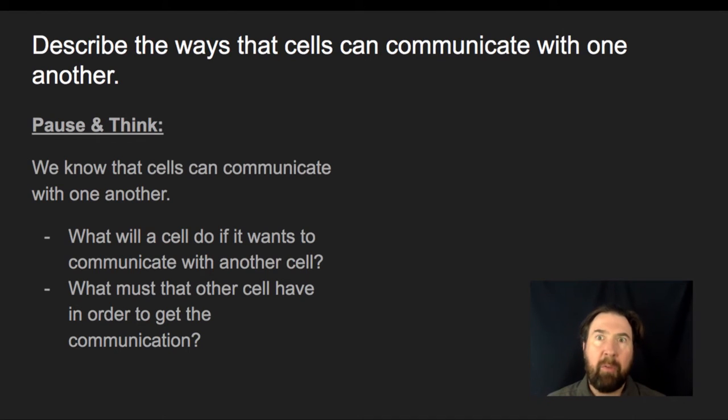In other words, how does a cell communicate to another cell? And then what must the other cell have in order to get that communication? So these are pretty simple questions and should have fairly simple answers. You may have some complicated vocabulary to add in, but take a minute, pause and think, and come up with how cells communicate with one another and how another cell can get that signal.